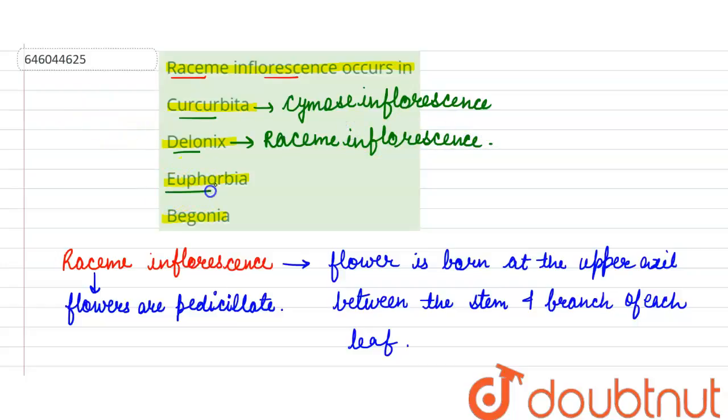Now third option is Euphorbia. Euphorbia family is characterized with the presence of cyathium type of inflorescence.